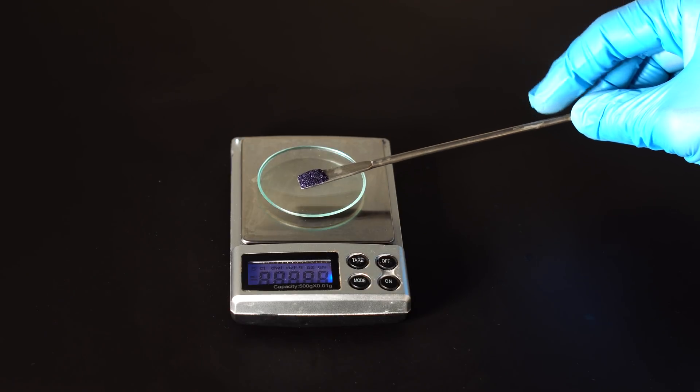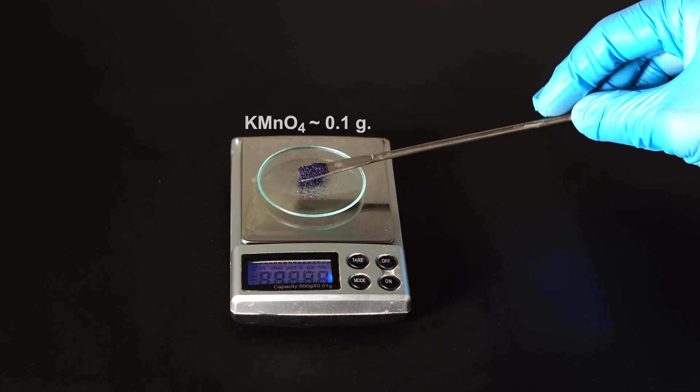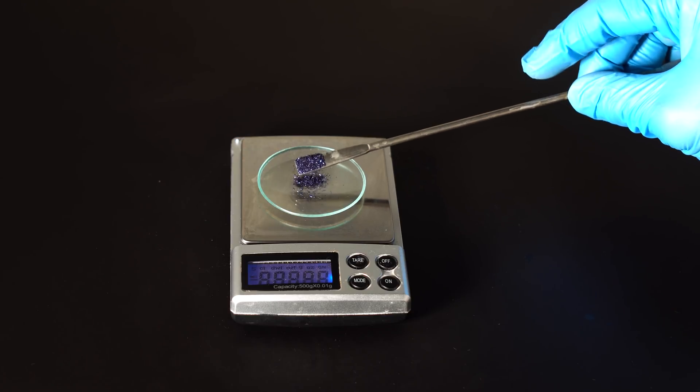For this reaction, I'll be using a small amount of potassium permanganate, about one-tenth of a gram, that I'll dissolve in 50 ml of water.